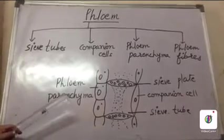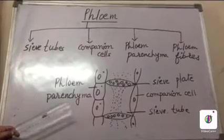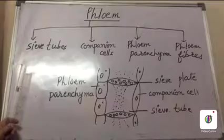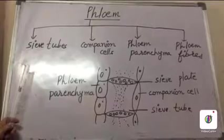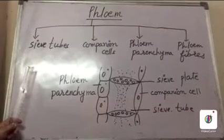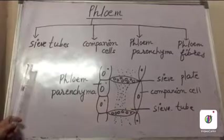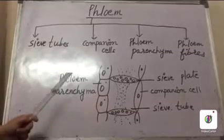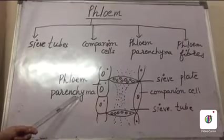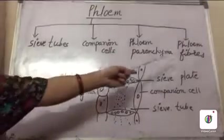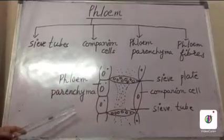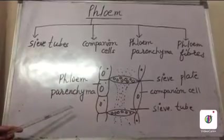Now, talking about the functions of phloem. The first function of phloem is the translocation of food from the leaves to the various parts of the plant. The second function is that phloem parenchyma helps in the storage of food. Third, phloem fibres help in providing mechanical support to the plant.